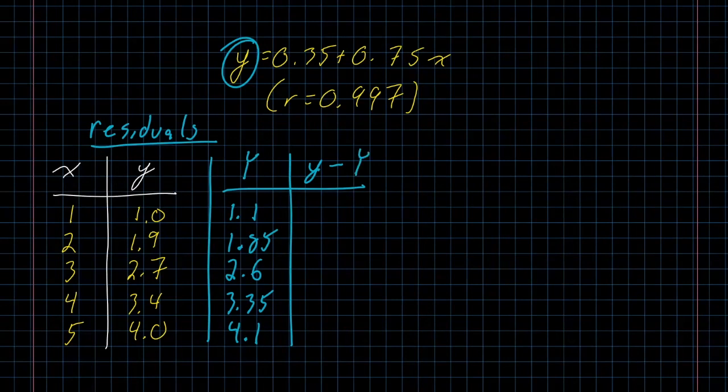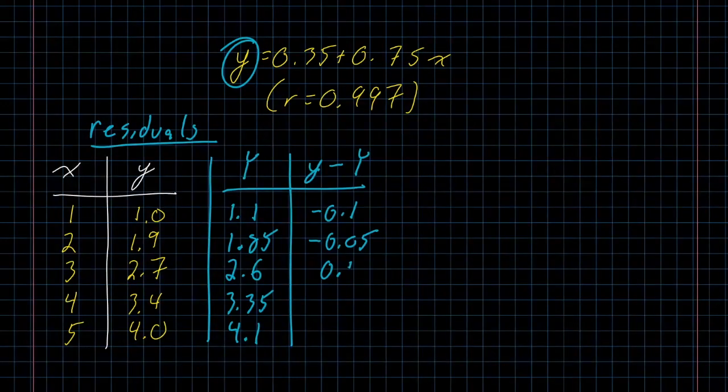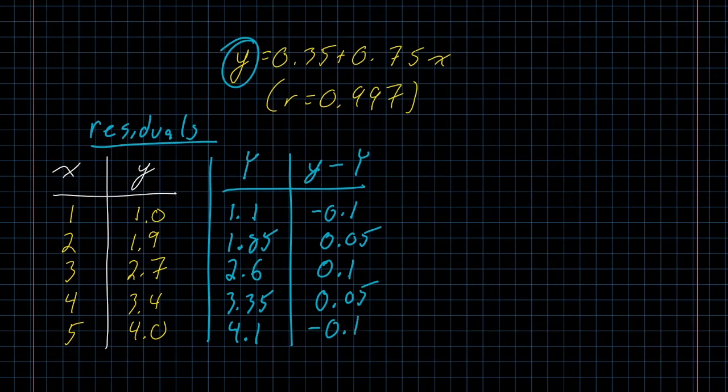That very often happens, that the values themselves are off from the model. But what can be interesting and is something that we should watch out for is the residual. How are they off? If I take the Y value from the situation and I subtract the Y value from the formula, in this case, I get negative 0.1, negative 0.05. 1.9 minus 1.85 is positive 0.05. 2.7 minus 2.6 is positive 0.1. Then I get positive 0.05, and I get negative 0.1.